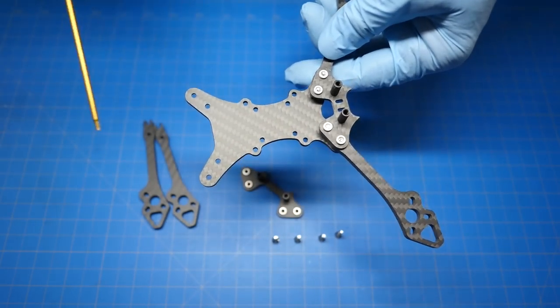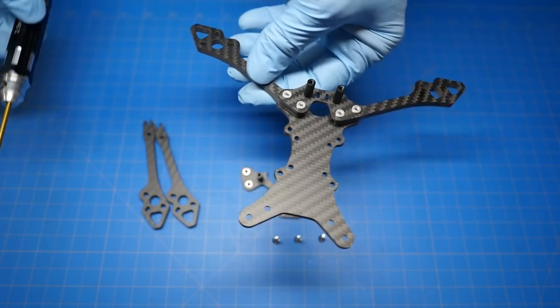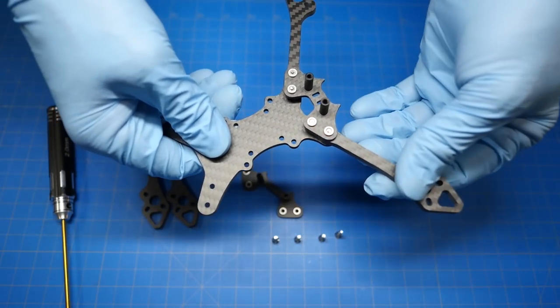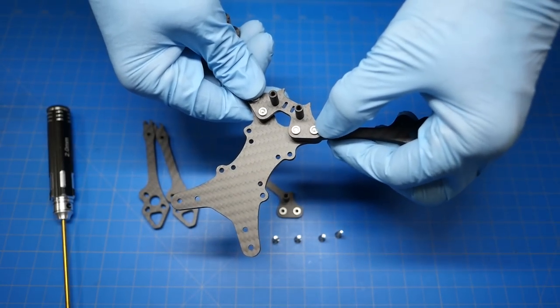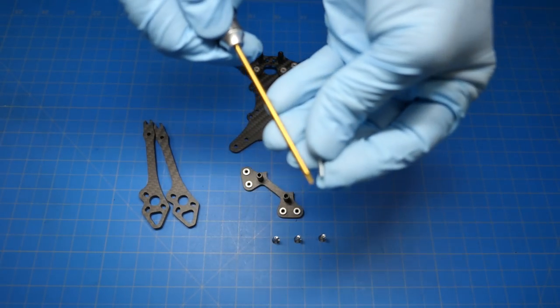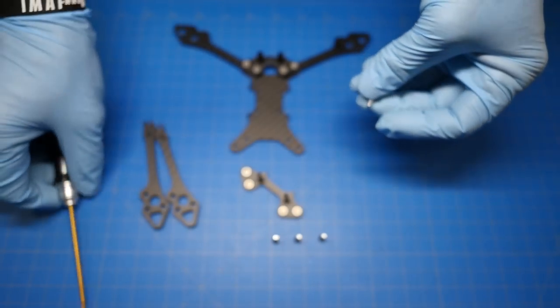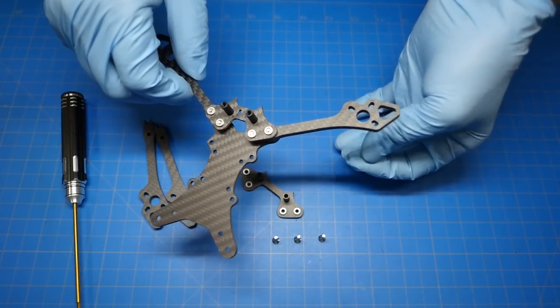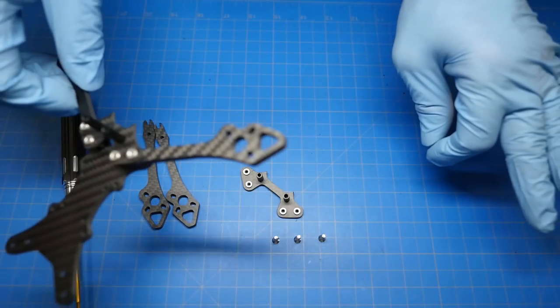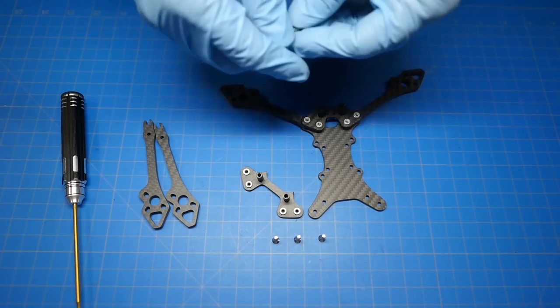If you want to make absolutely sure that doesn't happen, you can use blue Loctite. Just take a little bit of Loctite right here on the end, just a touch, when you run these things in and that problem is gone.